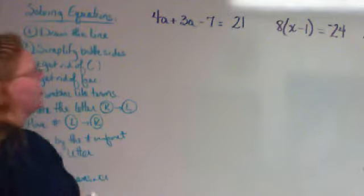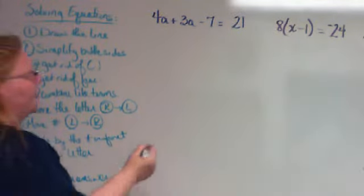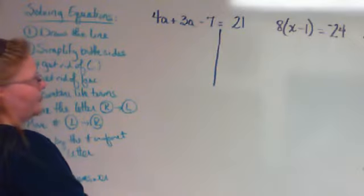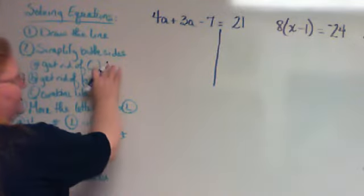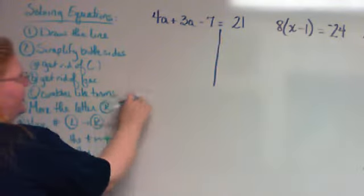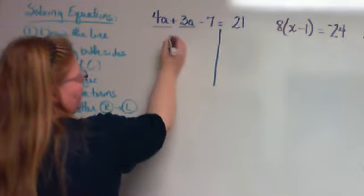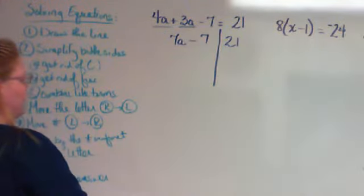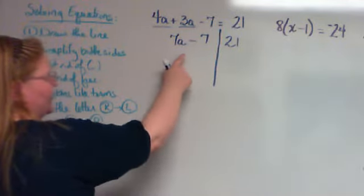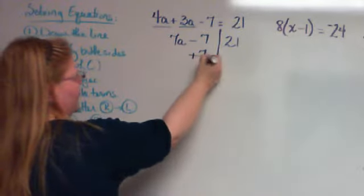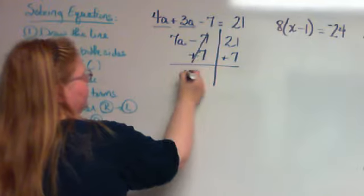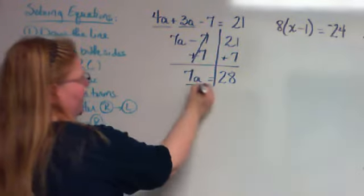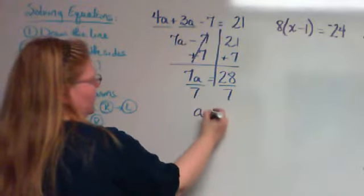I have two problems up here. I think you have the ability to do these. I'm going to draw my line. I don't have any parentheses or fractions, but I do have like terms on this side. 4a plus 3a gives me 7a minus 7 equals 21. Add 7 to both sides, so 7a equals 28. Divide both sides by 7 to get a equals 4.